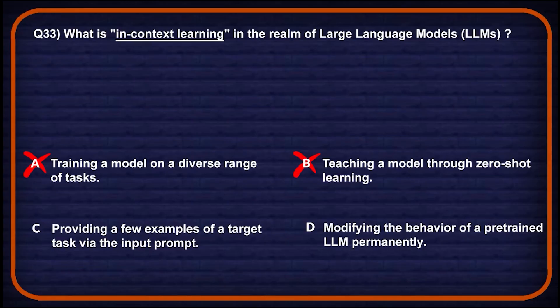Option C: providing a few examples of a target task via the input prompt — in-context learning uses examples in the prompt to guide task performance, so this might be a potential answer. Option D: modifying the behavior of a pre-trained LLM permanently — in-context learning does not alter the model's weights or behavior permanently, so wrong choice. Option C will be the correct one.